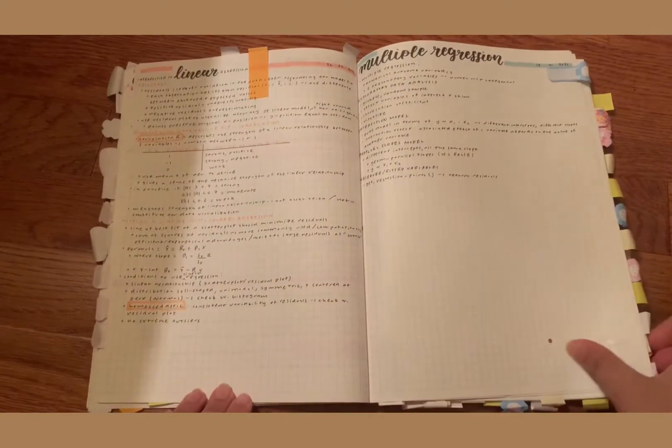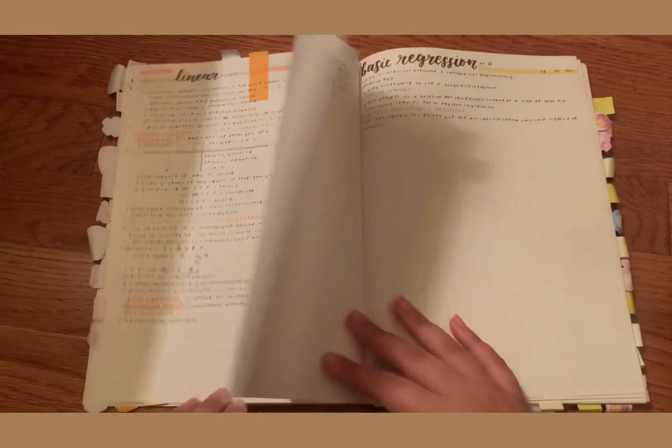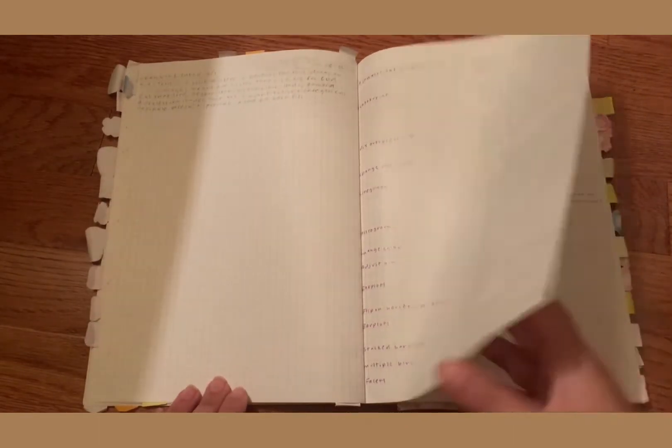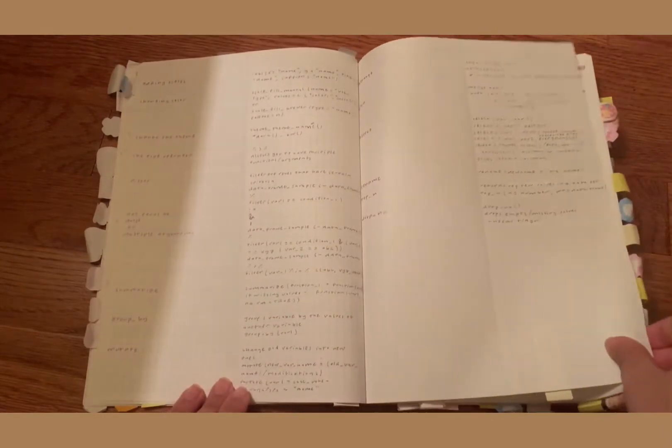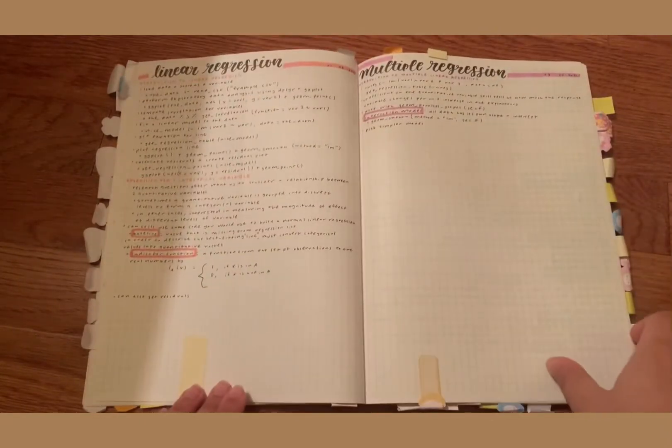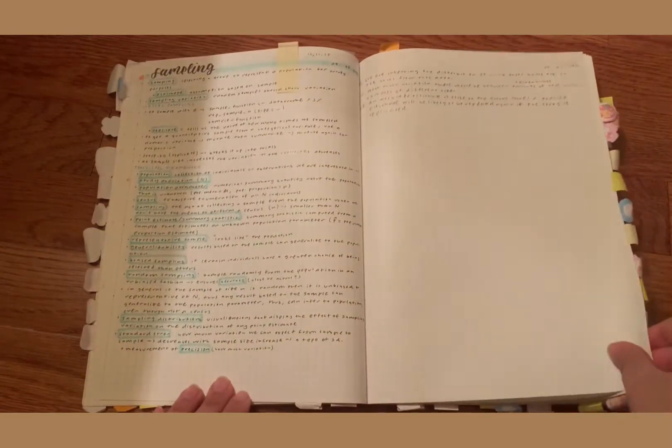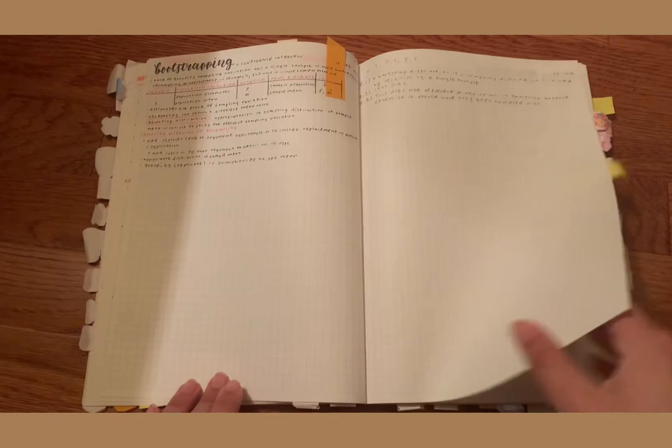And when you handwrite your notes, you have to pick and choose what to write down because you can't go quite as fast, and you're more likely to convey the information in your own words. If you like the convenience of digital notes but want to handwrite for better retention, consider taking your notes on a tablet with a program like GoodNotes, which lets you handwrite with a stylus, but good old-fashioned pen and paper works just as well, if not better, and I'm a pen and paper person myself.